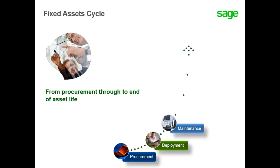Throughout the usefulness of the asset, you can track the maintenance of the asset including splitting it into smaller assets, transfer to different locations, or manage whether it needs to go into repair or out of service. Manage the value including the book value, the present value which includes recalculation, lease requirements, and so on.